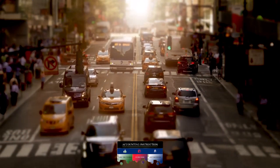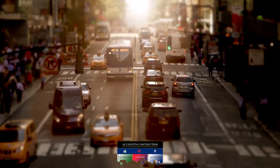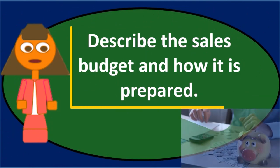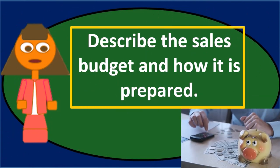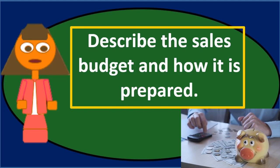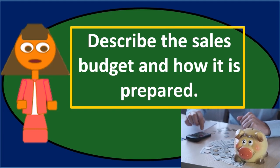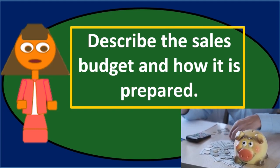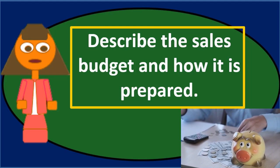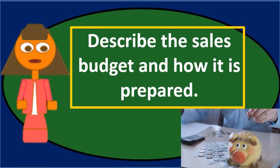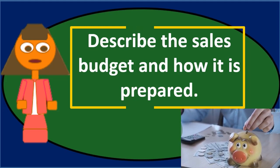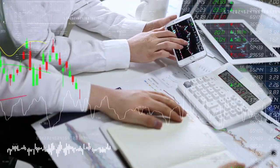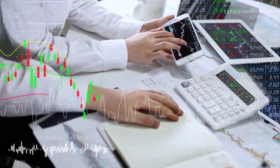So we could start off by noting that the sales budget is going to be a part of the master budget process — it's a formal process. We can go into the objectives of the master budget: to plan for the future, to organize people, to get people on the same page, and to provide incentives for people.